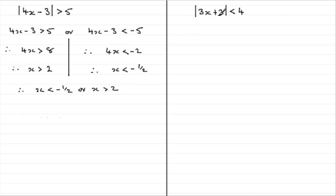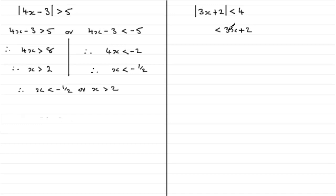Now in this second example, we've got a less than. Some function of x being modded is less than a constant value, plus 4. For this type of situation, when you've got less than, it means that 3x plus 2 has to lie between minus 4 and plus 4. Whatever the constant is, it will be the negative of it and the positive value of it.